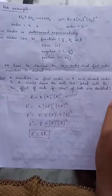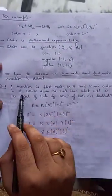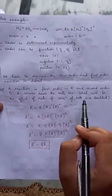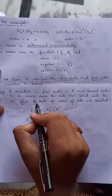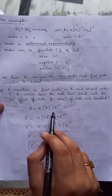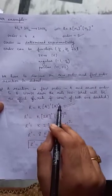Now let's consider a question. A reaction is first order in A and second order in B. Write down the rate law. What will be the effect on rate if the concentration of both are doubled? R equals K A to the power 1 as it is first order. Second order in B, B to the power 2.